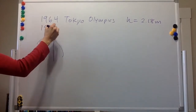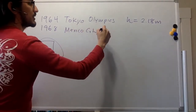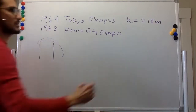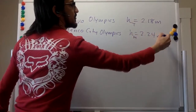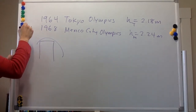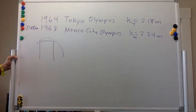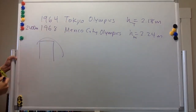Four years later, in the 1968 Mexico City Olympics, the gold medal went to the guy who jumped 2.24 meters. The altitude is different — Mexico City is at 2400 meters, and Tokyo, being on the Japanese islands, is pretty close to sea level. So there's a pretty big difference in the altitude.